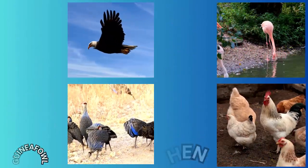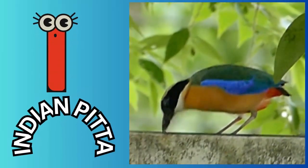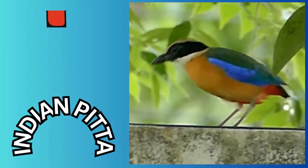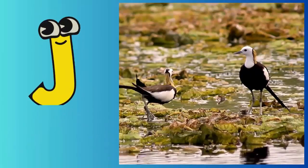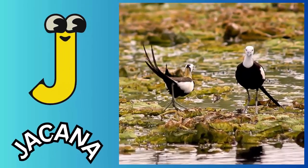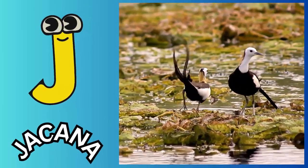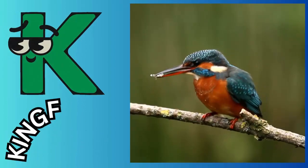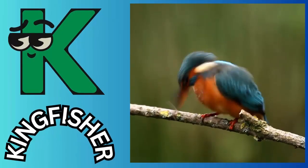I is for Indian Pitta. J is for Jacana. K is for Kingfisher.